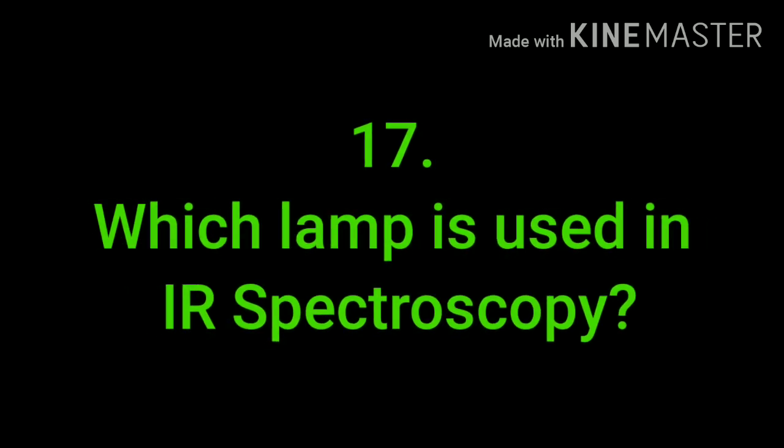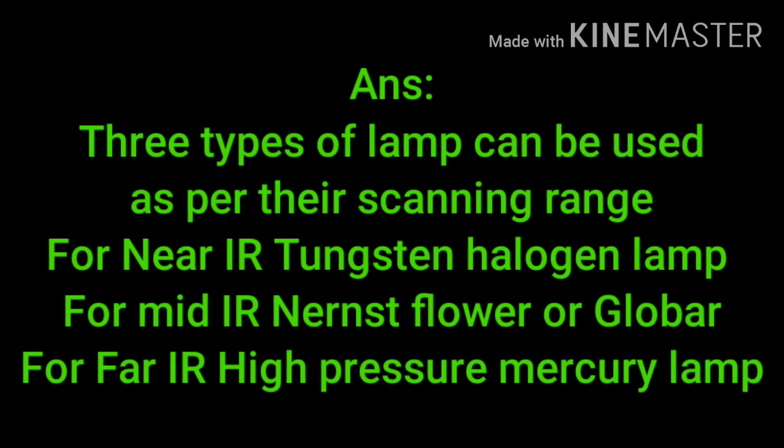Which lamp is used in IR spectroscopy? There are three types of lamps used. For near IR, a tungsten-halogen lamp is used. For mid IR, a Nernst filament or Globar is used. For far IR, a high-pressure mercury lamp is used.